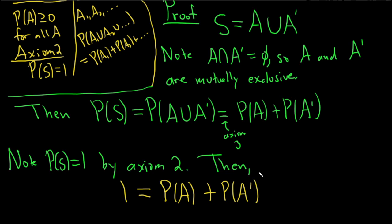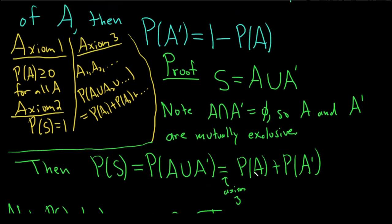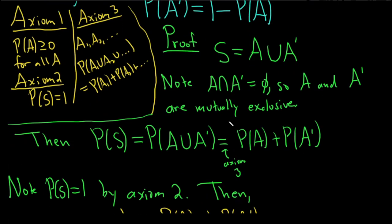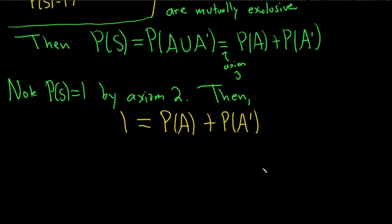And if you recall, we had to show that the probability of the complement is 1 minus the probability of A. So now all we have to do is subtract the probability of A. So we'd get the probability of A complement is equal to 1 minus the probability of A. And that completes the proof.